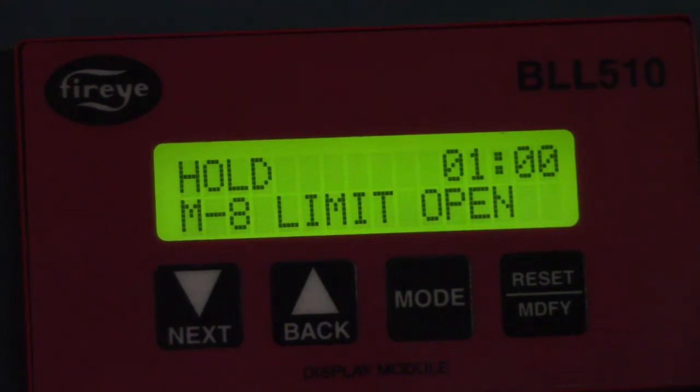This video will help me troubleshoot and find the problem that's preventing this boiler from going into purge. The main indication by the FireEye is that we are in M8 limit open. We need to find out what that means. It's not telling me specifically what's holding the boiler out, but it is giving me a clue: M8.